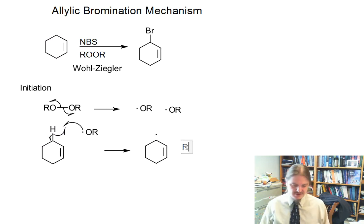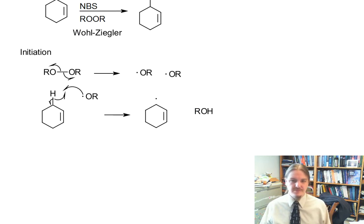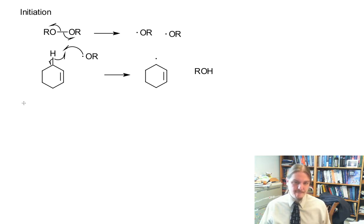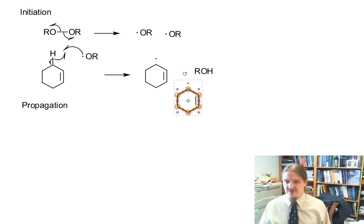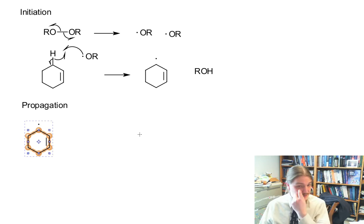And the other product of this step is a molecule of alcohol, which now is done. Now we move into the propagation steps. Notice we haven't even gotten into the n-bromo succinamide yet, but we're about to.